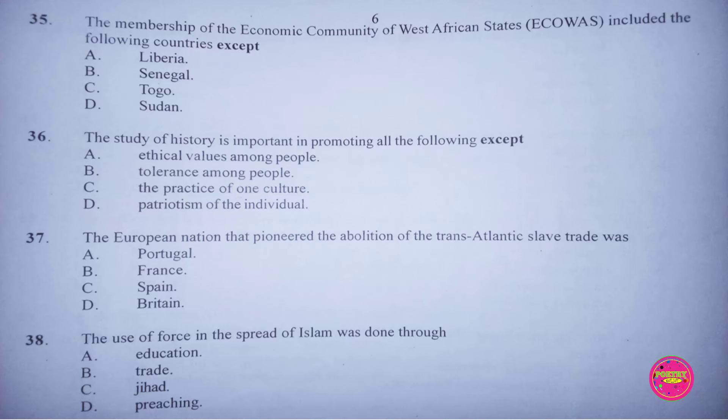Question 35. The membership of the Economic Community of West African States, ECOWAS, included the following countries except: A. Liberia, B. Senegal. The correct answer to this question is D. Sudan.